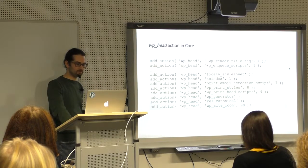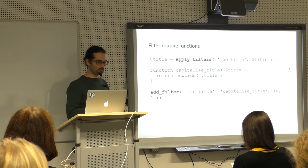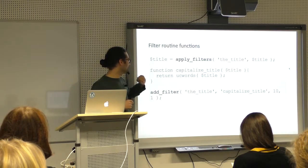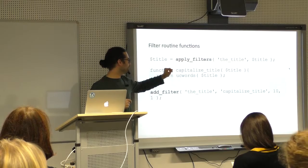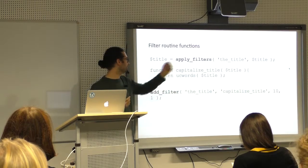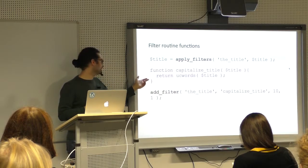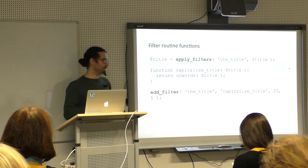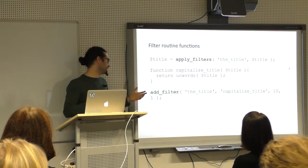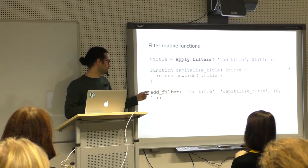For filters, the hook routine looks slightly different. You don't have do_action(), but apply_filters(). Very importantly, you not only have the hook name — in this case 'the_title' — but you also provide a value to filter, because you want to filter something like the title and then return it. You also have a function — I made up an example where it capitalizes the letters, like the example I had before. And then you don't use add_action() but add_filter(), which connects both of them.